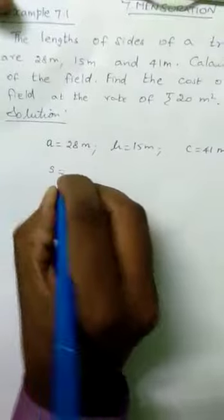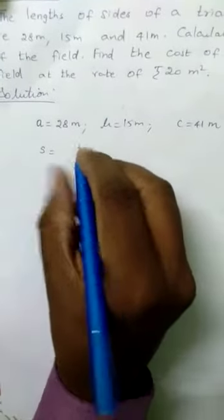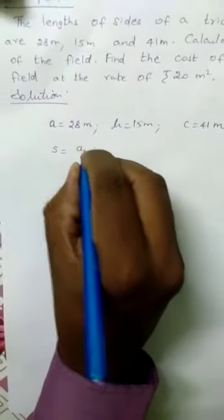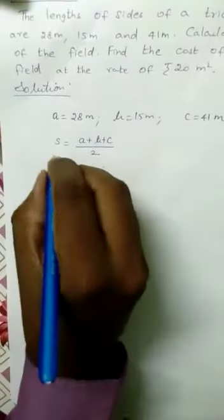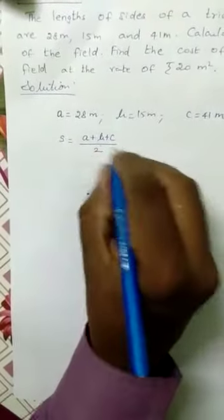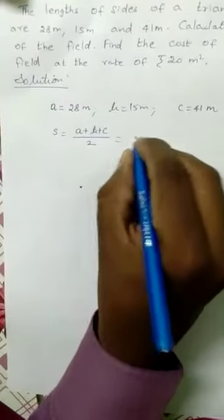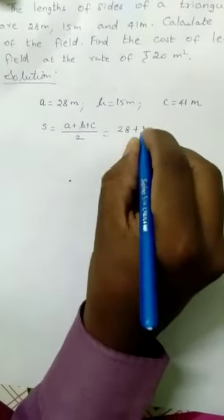The next one, S. S stands for the semi-perimeter of a triangle. The three sides divided by 2. That means semi-perimeter. A plus B plus C divided by 2. A is 28, B is 15, plus C, 41, divided by 2.